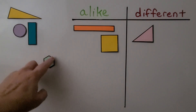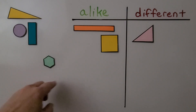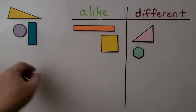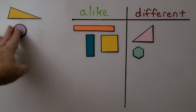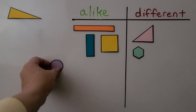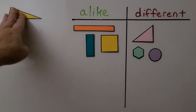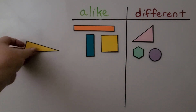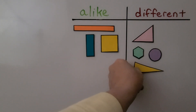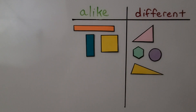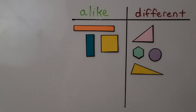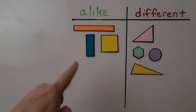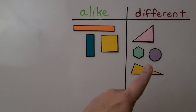Here we have a hexagon — it has six vertices, so that's not four. We can put this in the 'different' set. Here we have another rectangle — it has four vertices, just like the others in the alike set. Here we have a circle — it has a curve, no corners, no vertices, so it's different. And here we have another triangle with three vertices — that's not like the shapes that have four. So all the shapes with four vertices are alike because they all have four square corners, and the other shapes are different because they don't have four vertices.